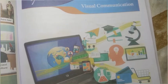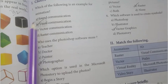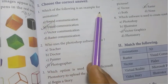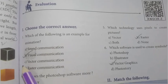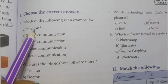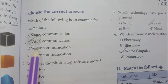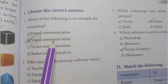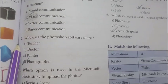In the lesson book back exercise, we will cover the explanation. Which of the following is an example for animation? Animated pictures — that is the answer: animations. So what are the animations for this example? Visual communication. Visual communication is the animation for this example.